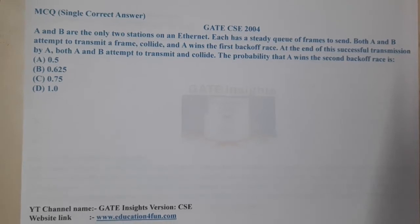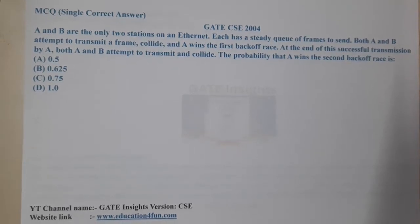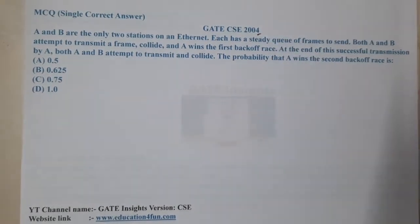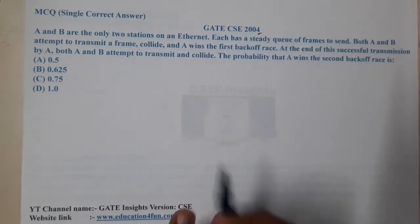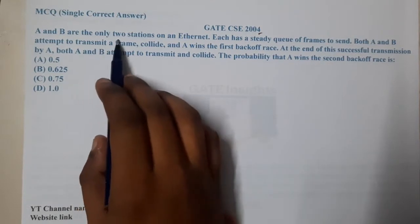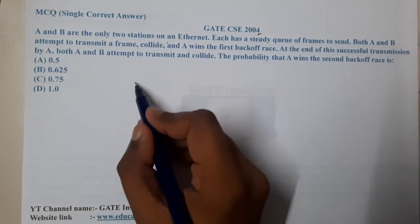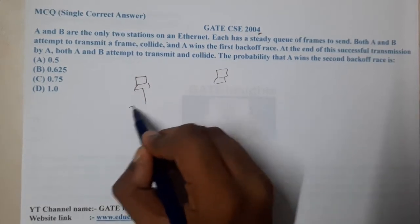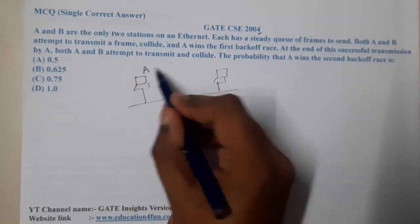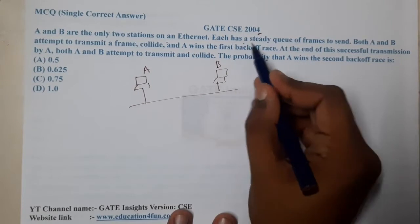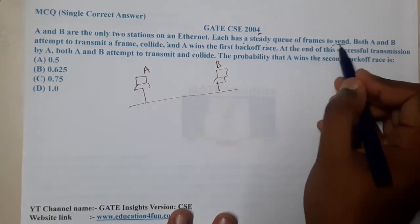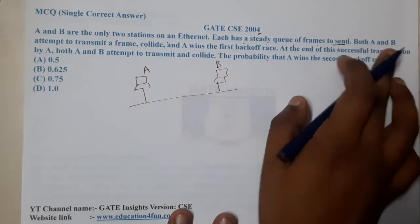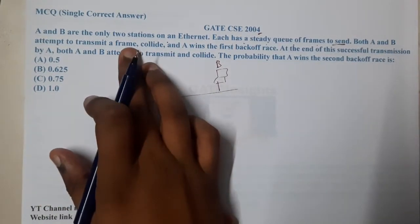Hello guys, we are back with our next lecture. This question belongs to GATE CSE 2004. A and B are the only two stations on the Ethernet — one station here and one station here. These are the only two stations in the network, and each has a steady queue of frames to send. So both A and B are having some frames to be sent.